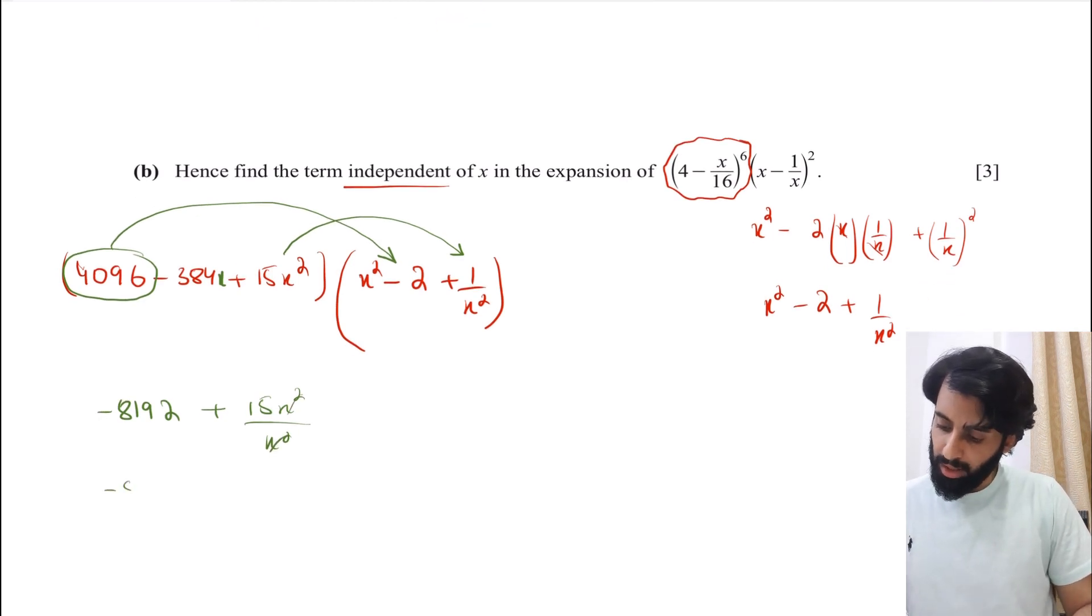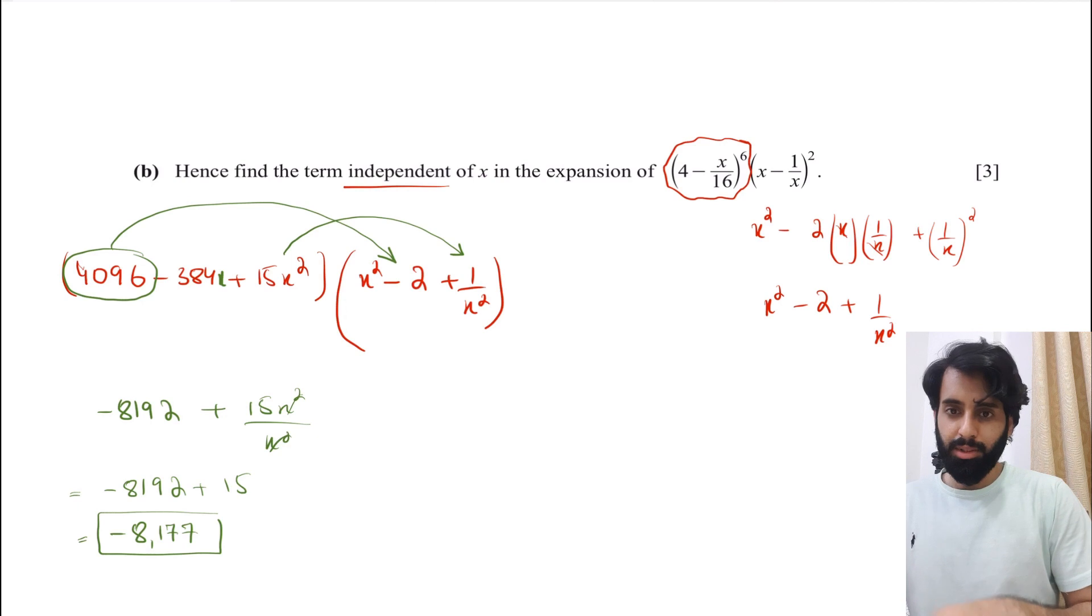And let's see what do we have? We have minus 8192 + 15. So minus 8192 + 15 gives me minus 8177. And this right here is the final answer. So this is what you got to do when you're asked to find out the term that's independent of x or perhaps the coefficient of x. You got to see what terms should be multiplied in order to obtain what is required.